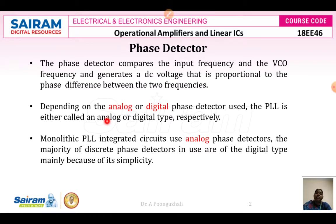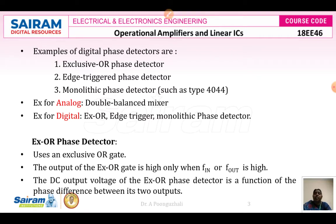The phase detector can be defined as an analog type or a digital type. Monolithic PLL integrated circuits use analog phase detectors. However, the majority of phase detectors used are of digital type because of their simplicity. An analog phase detector is basically a switch. Examples of digital phase detectors are the exclusive-OR phase detector, edge-triggered phase detector, and monolithic phase detector. Analog phase detectors are used in double balanced mixer applications.